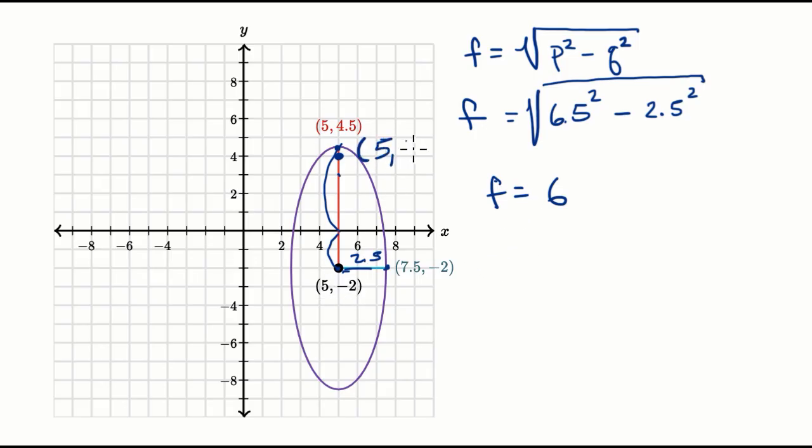And then the other would be at 5, and then one, two, three, four, five, six. So 5, and then -2 minus 6 is -8. And we're done. We have identified the foci for this ellipse.